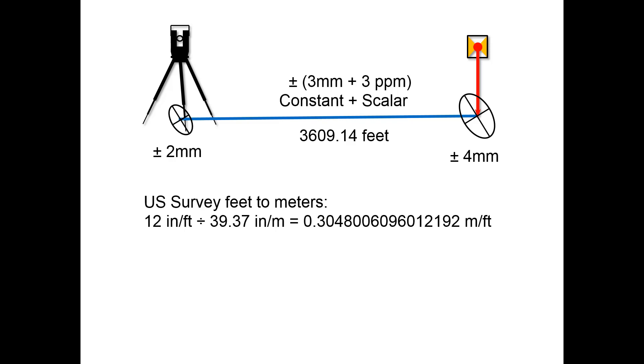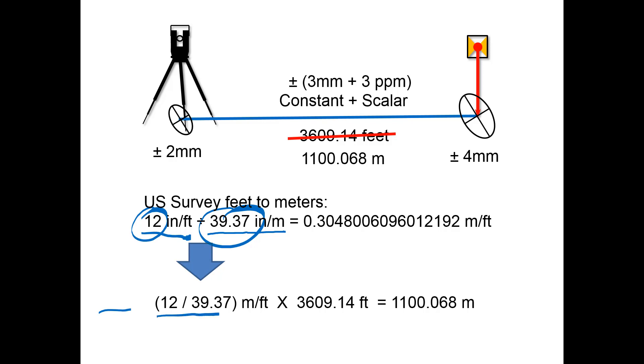The official conversion from U.S. survey feet to meters: 12 inches per foot and 39.37 inches in every meter. When we apply this ratio of 12 to 39.37, we convert the 3609.14 feet to 1100.068 meters. That is our distance and will become important for calculating our scalar error.